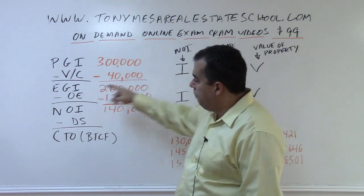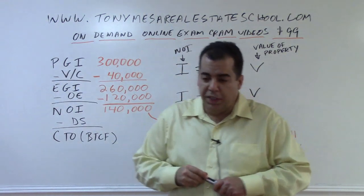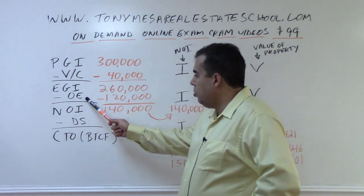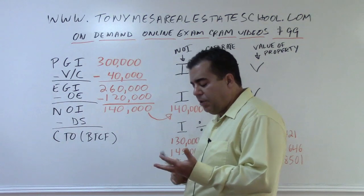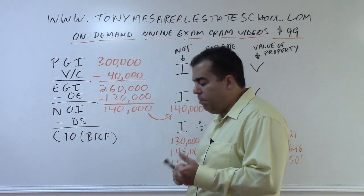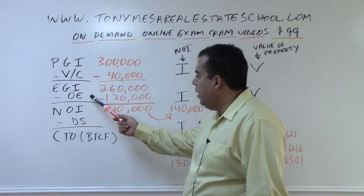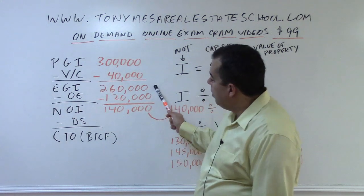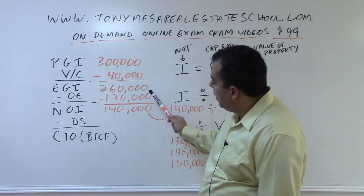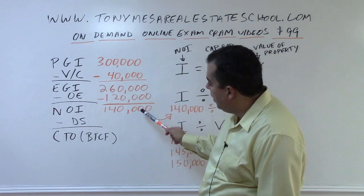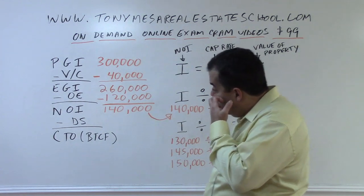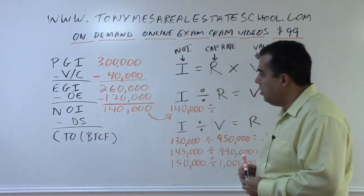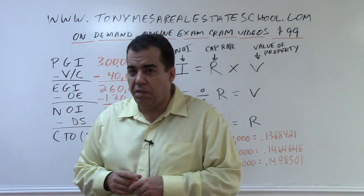That $260,000 is called the effective gross income — how much should really be coming in. From that, we subtract our operating expenses: things like property taxes, insurance, maintenance, property management fees, garbage dumpsters, and so forth. In this example, the operating expenses are $120,000. So the $260,000 effective gross income minus $120,000 operating expenses gives us the net operating income. Gross minus expenses gives you the net. The net operating income is the number used to estimate the value of this income-producing property.